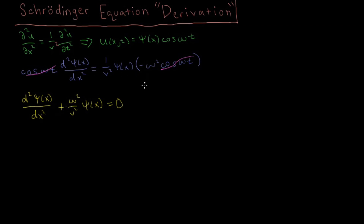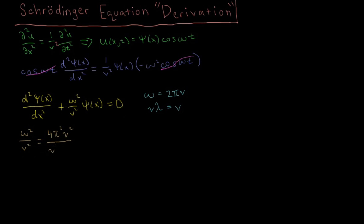Moving further from there, we know that omega equals 2 pi times the frequency — a standard angular quantity. And for v, we know that the frequency of a wave times its wavelength equals the speed of that wave. So omega squared over v squared equals 4 pi squared times nu squared over nu squared times lambda squared. The nu's cancel out, so omega squared over v squared becomes 4 pi squared over lambda squared.